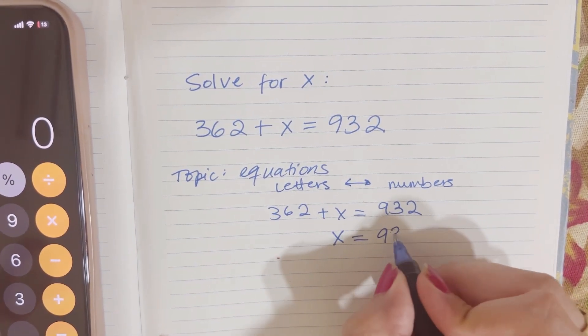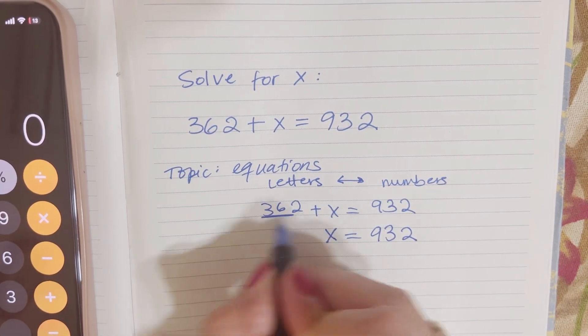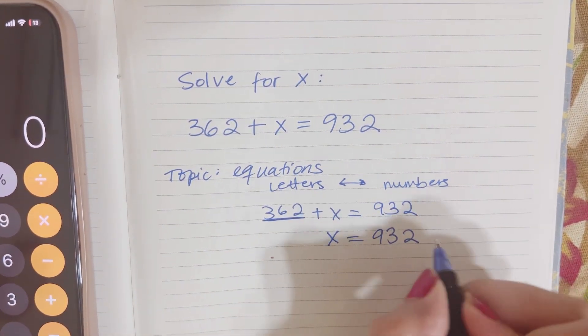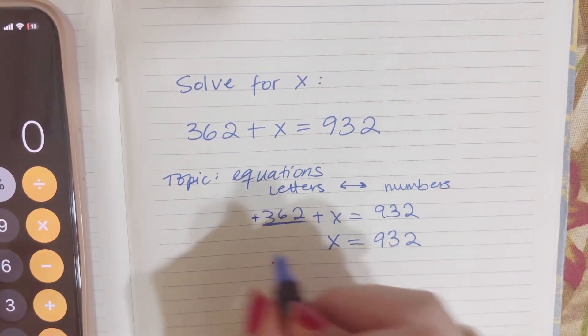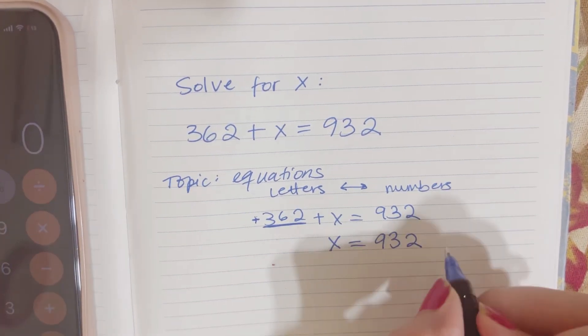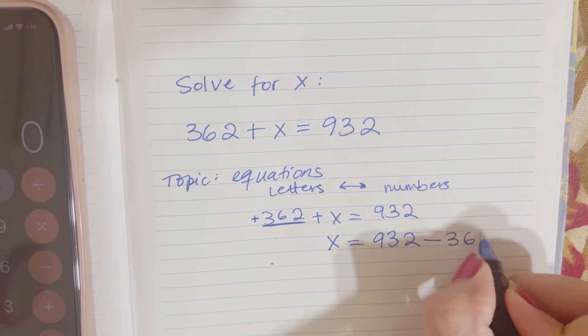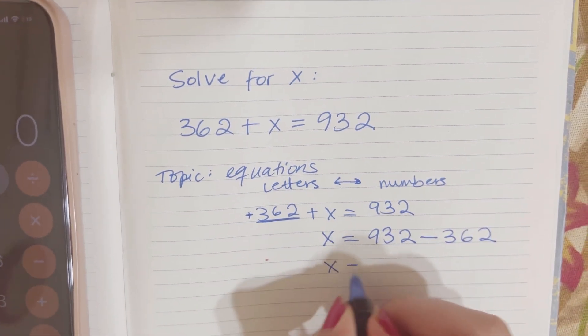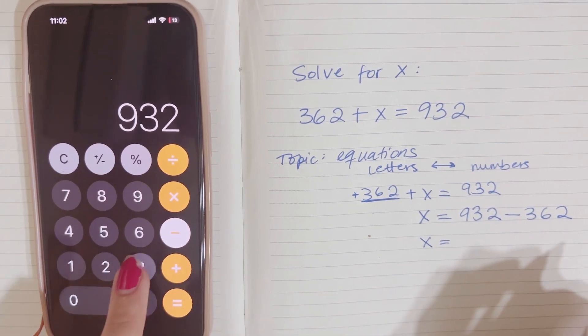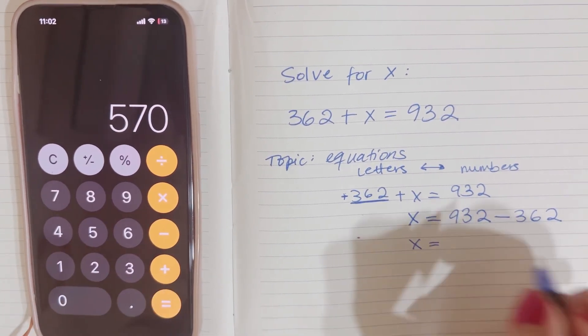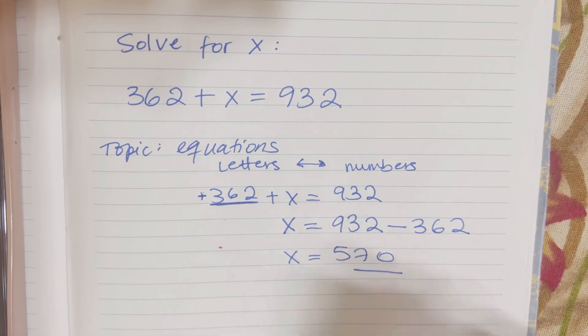So x stays here, 932 stays here. The number will go the other side, and because there's a plus sign that you don't see because it's positive, it will go reverse. So it will be negative, subtraction. So 932 minus 362 will be 570, your answer.